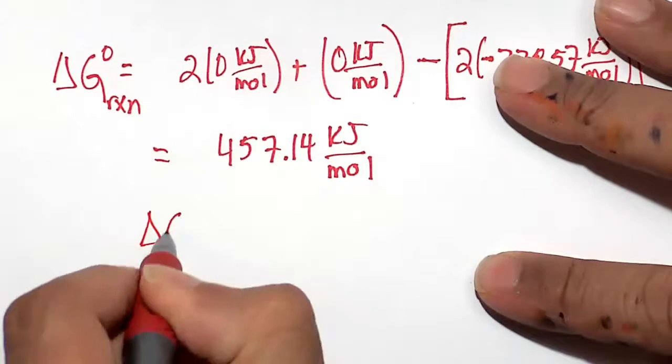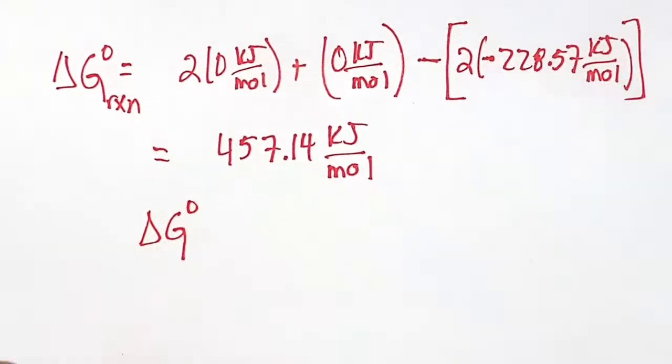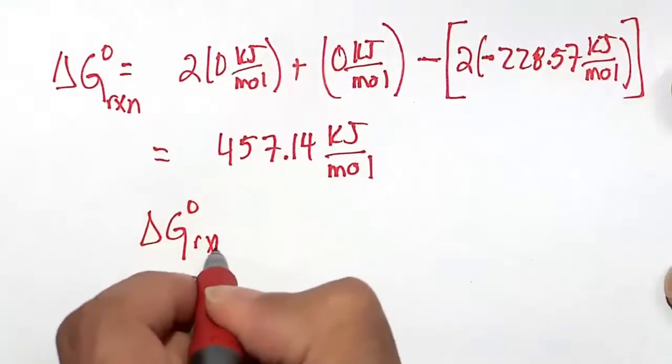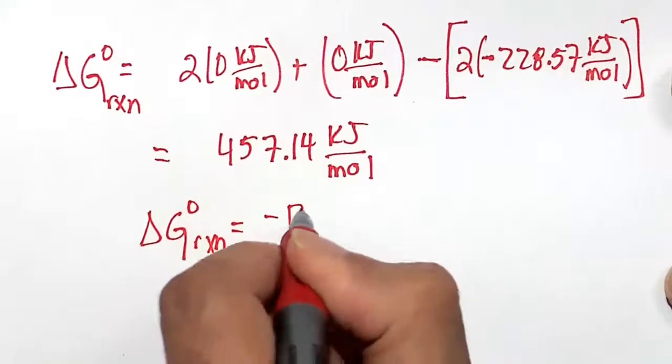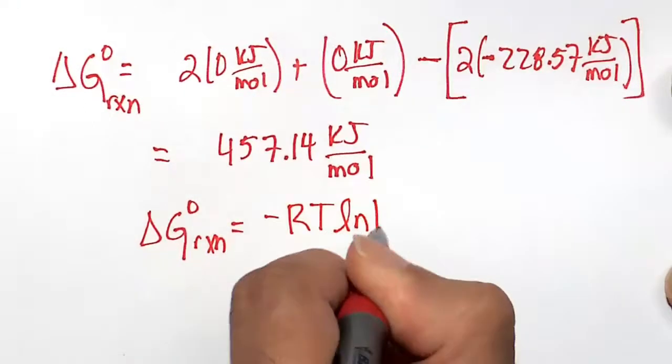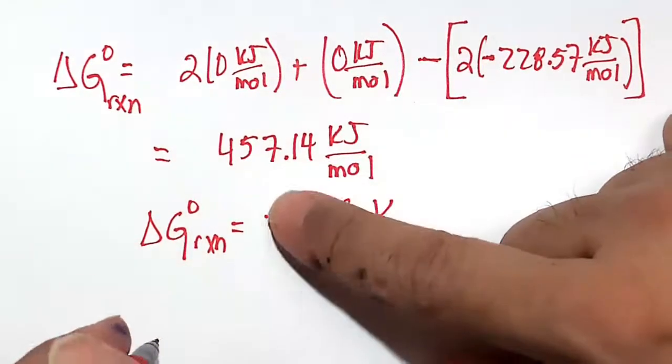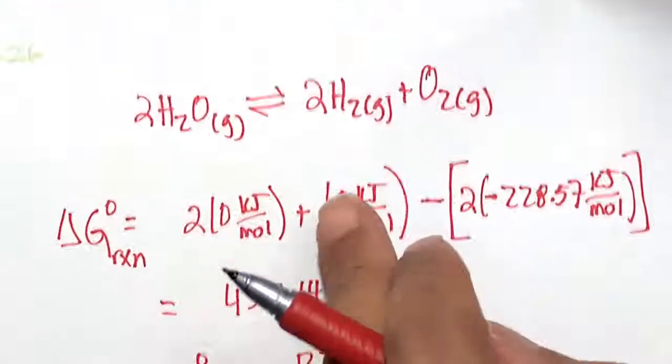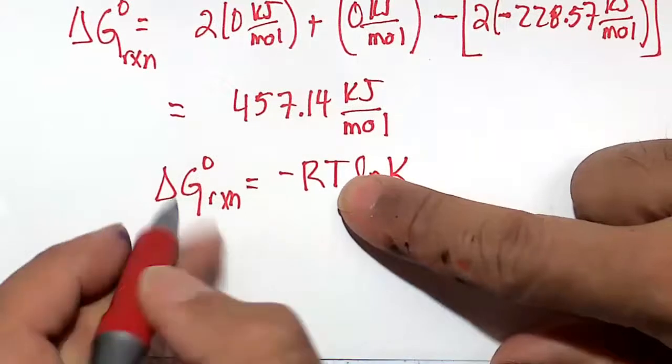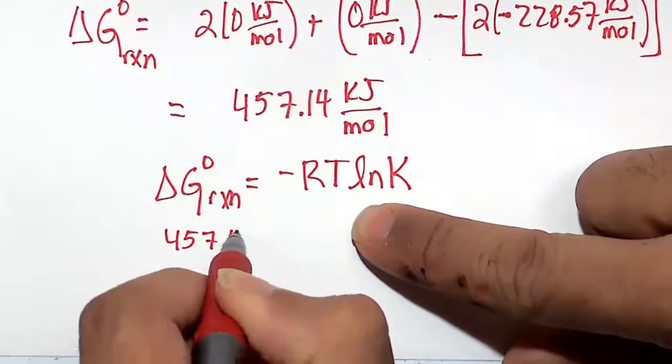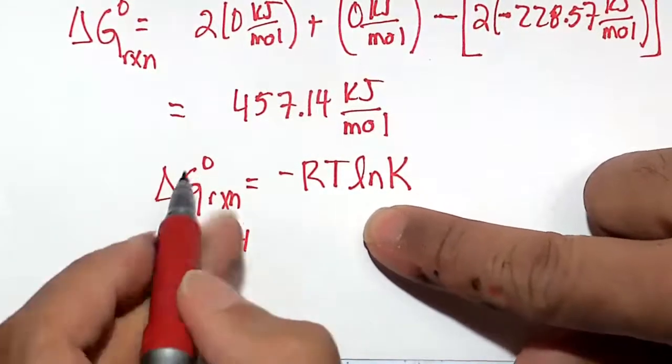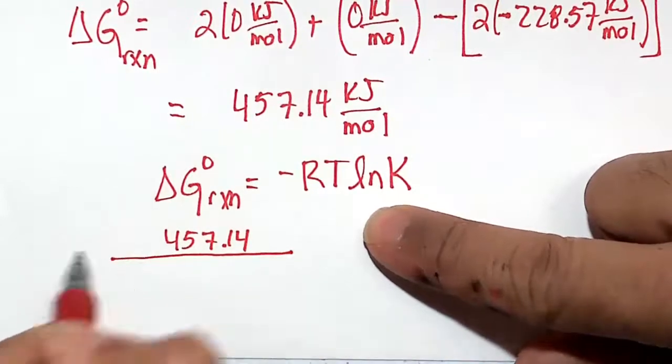The equation here for standard state is delta G of a reaction at standard state is minus RT natural log of K. In this case, the K is Kp. We already have delta G of this particular reaction and we calculated that. It's 457.14. We're solving for K, so I'm not really going to be interested in units.